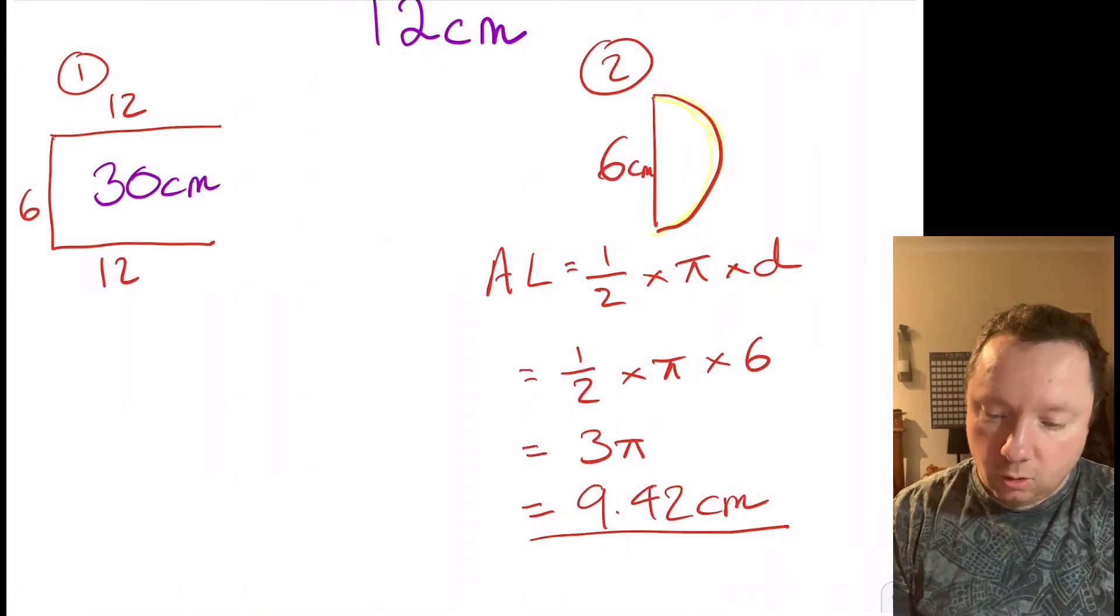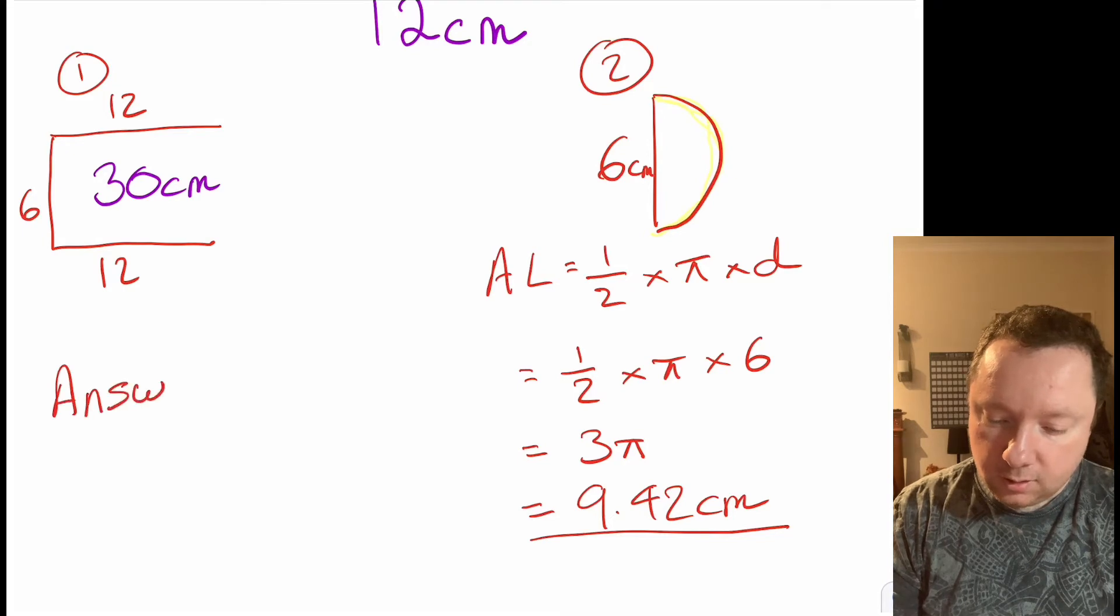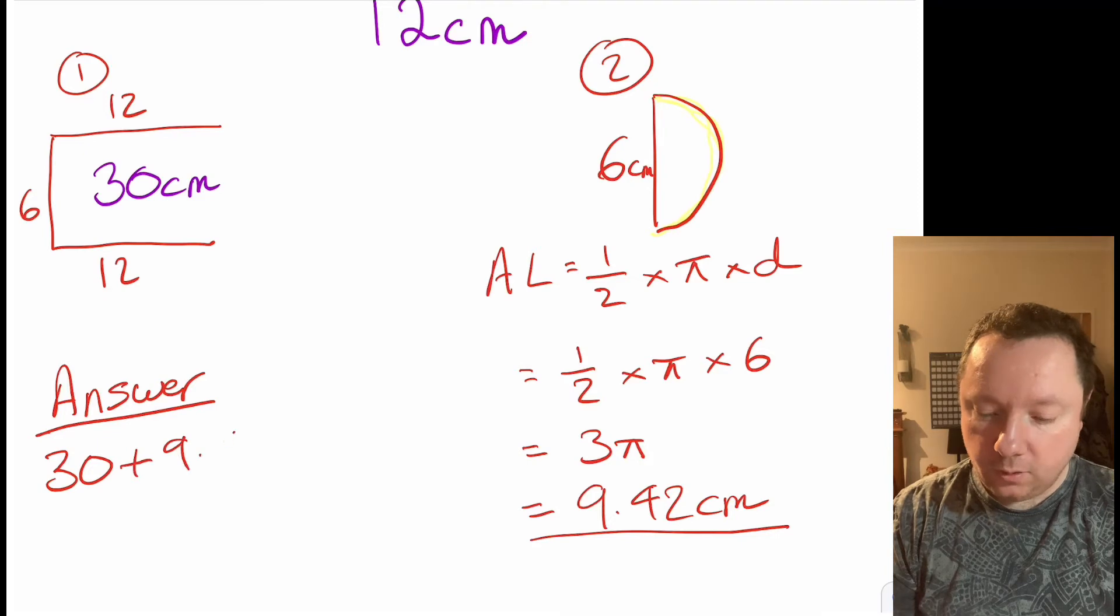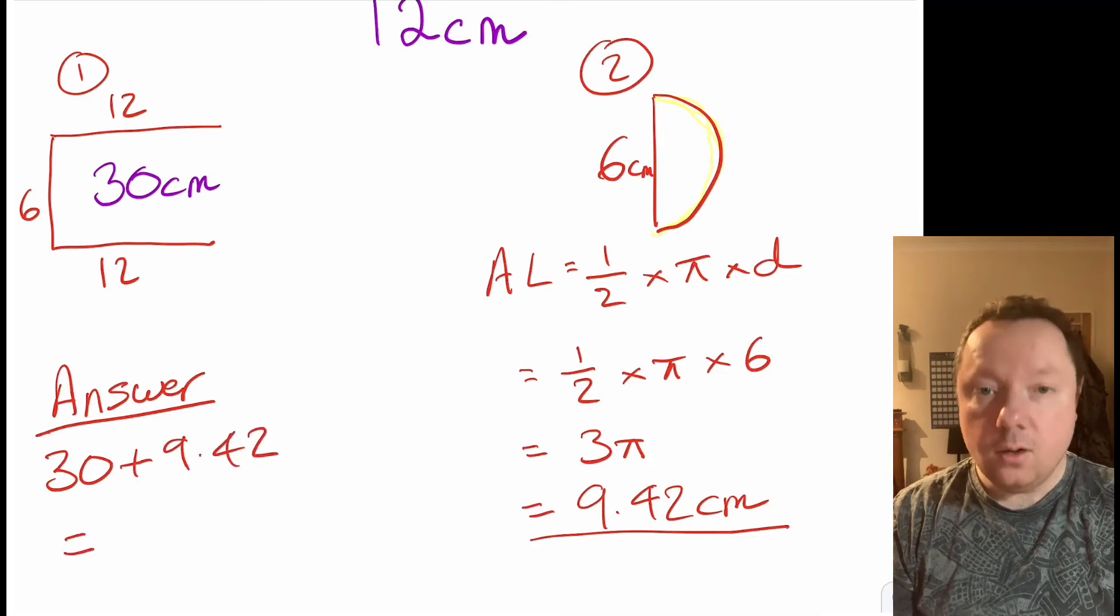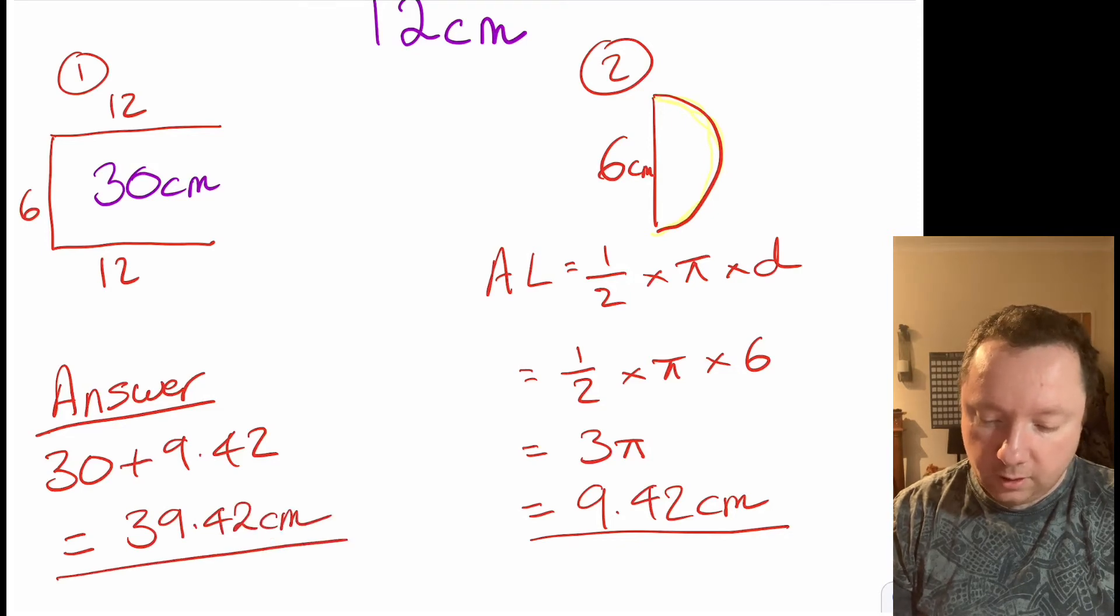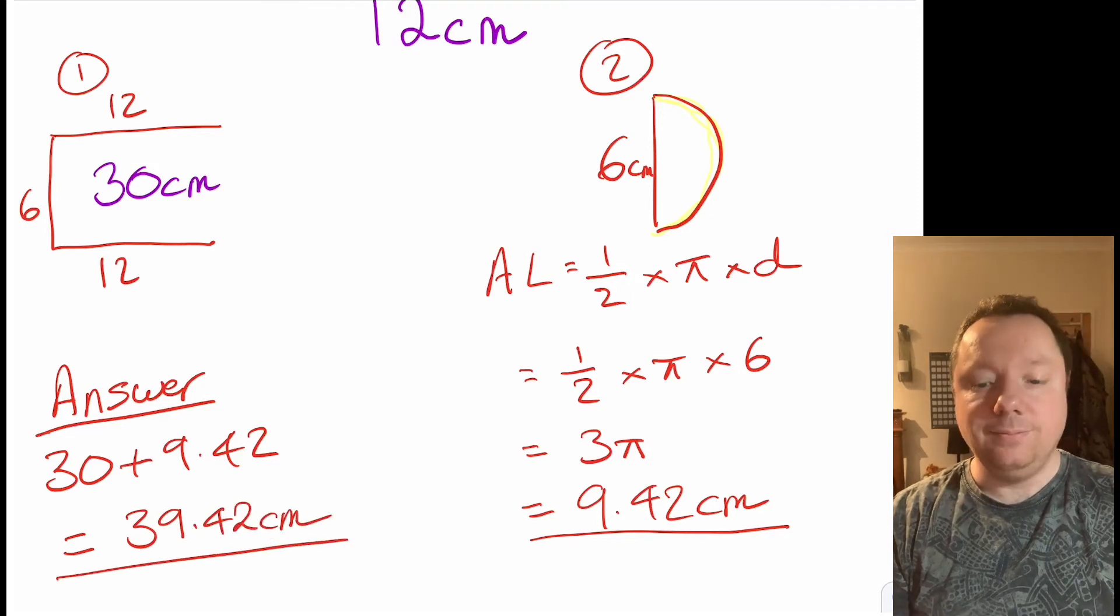So our total perimeter, the answer, is just 30 plus 9.42 which is 39.42. It's just centimetres because it's just the distance all the way around the outside. Let's go into a second example, slightly more complicated.